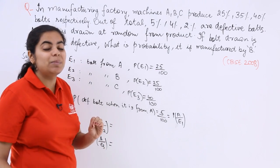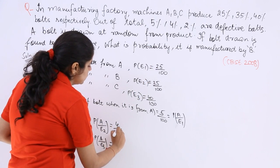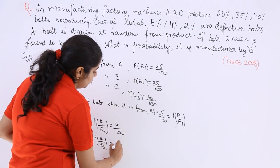Defective means it is denoted by A. Now what is given to you: 4% for B and 2% for C.